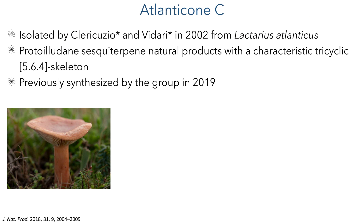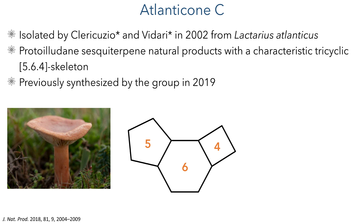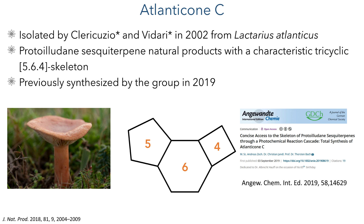Atlanticone C was first isolated by Claracusio and Vidari in 2002 from Lactarius Atlanticus, which is the orange milkcap mushroom. It belongs to the family of Protoiludine sesquiterpene natural products, which feature a characteristic 5-6-4 tricyclic skeleton. This research group has previously published a synthesis of this molecule, and this paper presents a new and optimised route to this interesting compound.